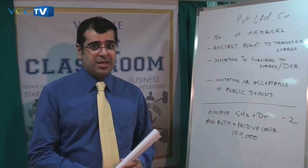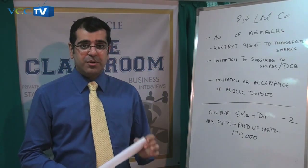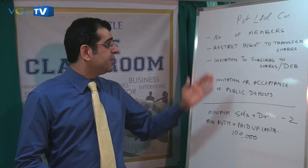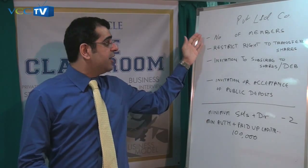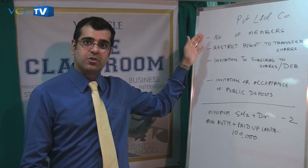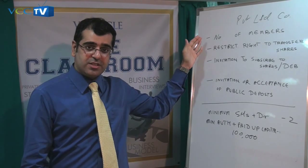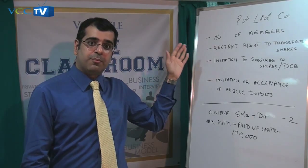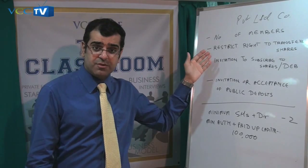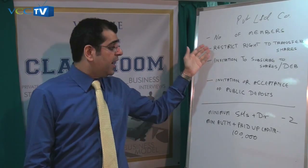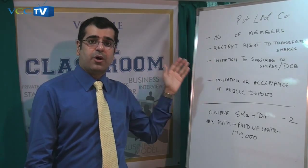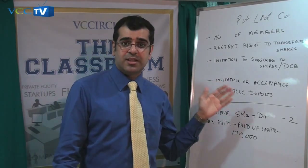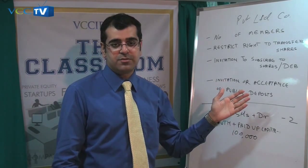What is a private limited company? It is a company which by its Articles of Association limits the number of members to 50, restricts the rights of its members to transfer their shares, prohibits the invitation to the public to subscribe to the shares and the debentures of the company, and prohibits invitation or acceptance of deposits from any person other than the members, directors, or their relatives.